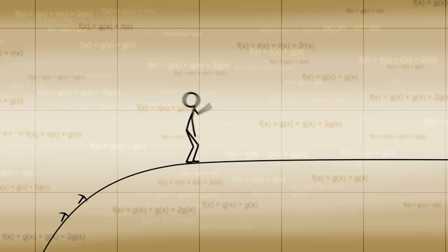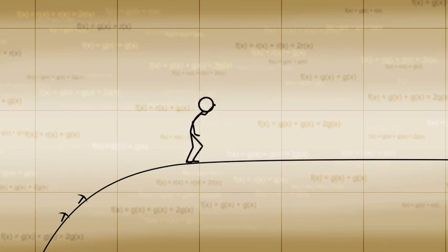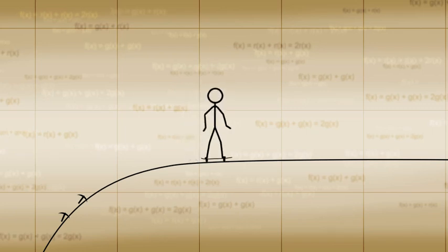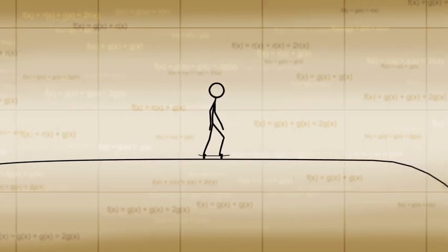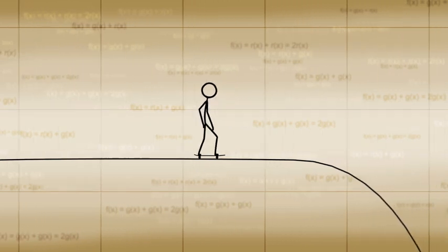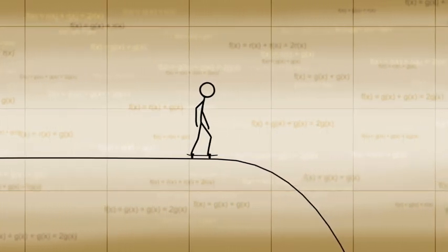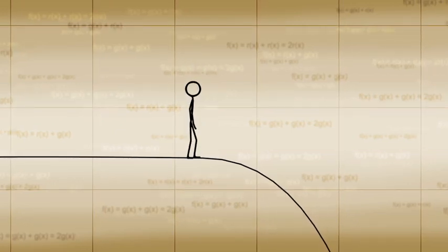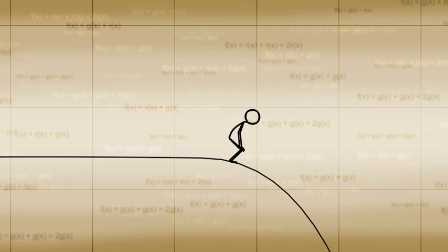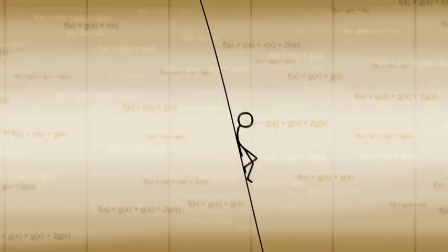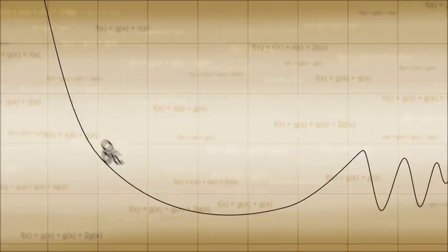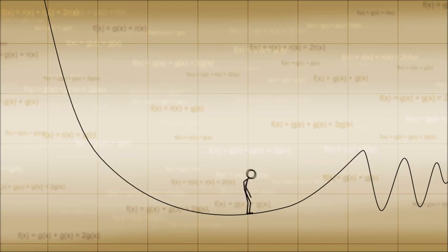If a function stays about the same as x grows around some neighborhood of x values, then it could be said that the derivative of this function stays close to zero around those values of x. If, for some neighborhood of x values, the function decreases in value as x grows, then the derivative of such a function is negative in that neighborhood of x values.